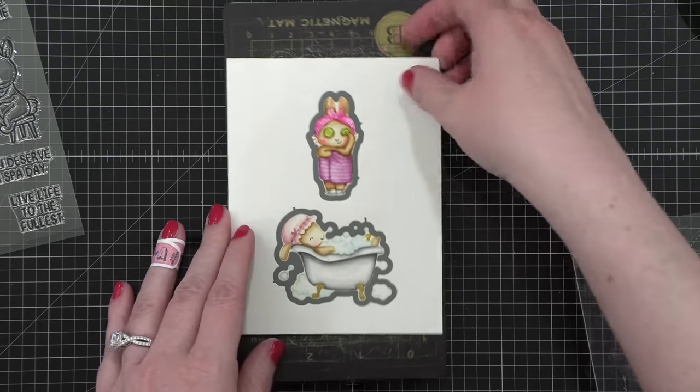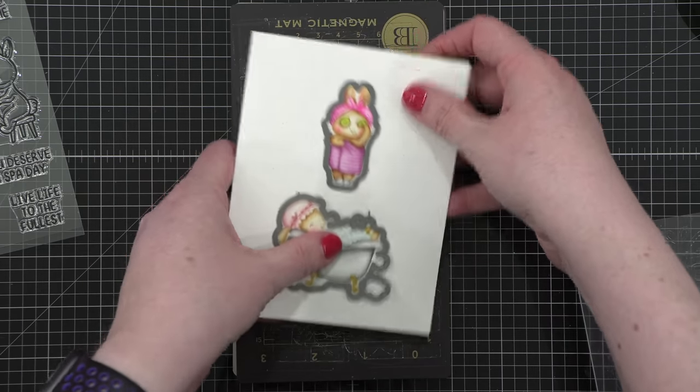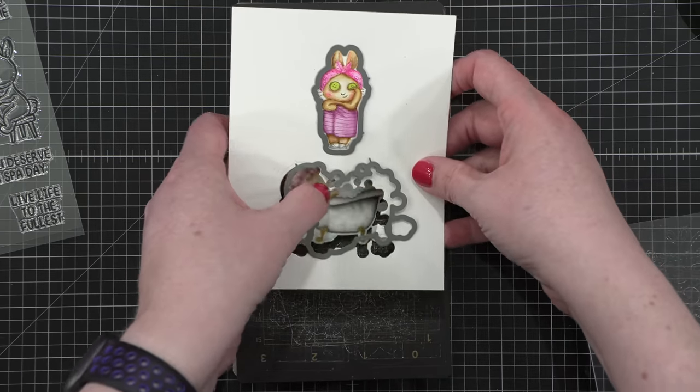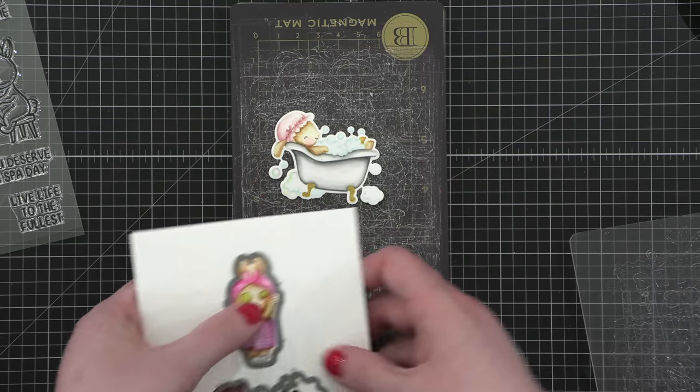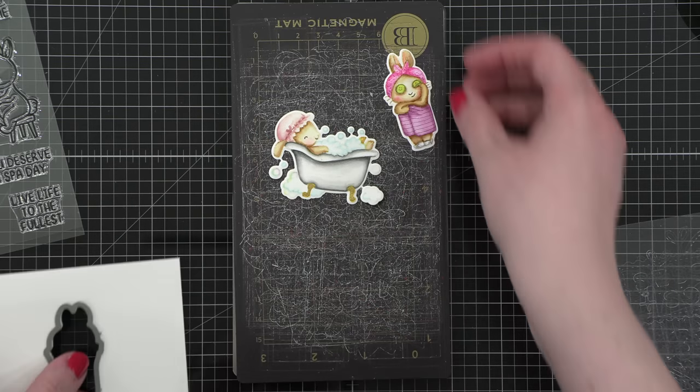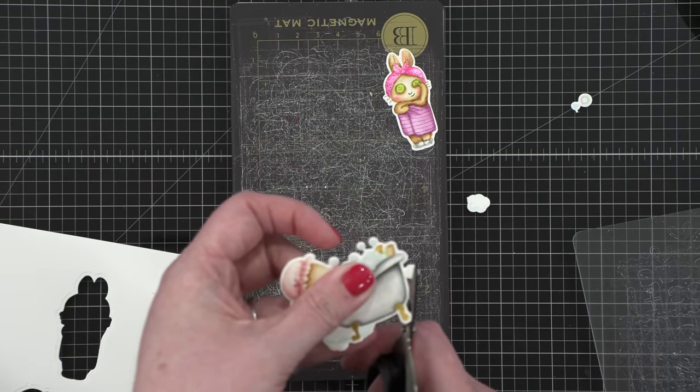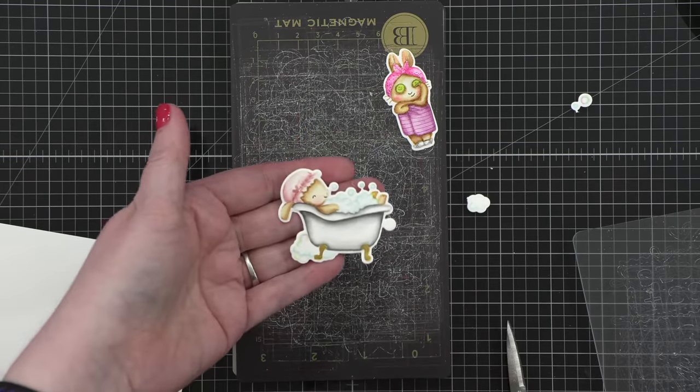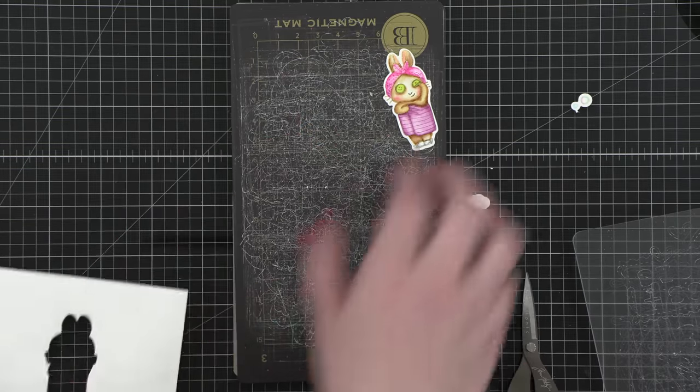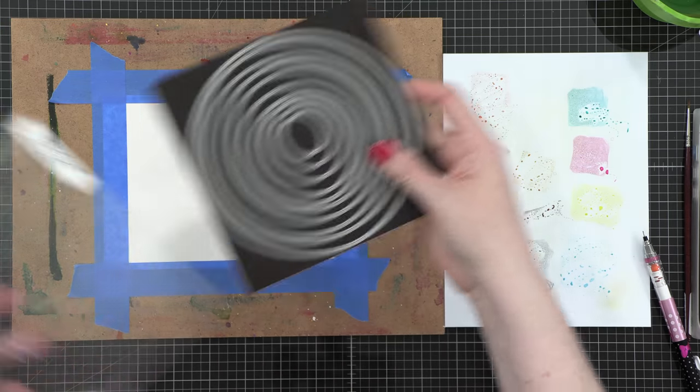After I finished painting both images I used the coordinating dies to cut them out. I did want to mention that on the bubble bath image I started painting the bubbles in a colorful iridescent fashion and then I decided to not do that at all. So there's one little section of bubbles that have a little more color on it but it's not really that noticeable in the end.